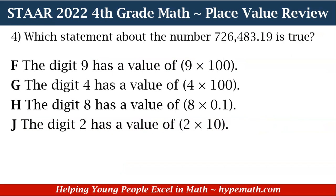Let's dive into question number four — this problem is in our workbook, available to purchase in our store; the link is in the description box. The problem says: which statement about the number 726,483 and 1,900 is true? F: the digit has a value of 9 times 100. G: the digit 4 has a value of 4 times 100. H: the digit 8 has a value of 8 times 1 tenth. J: the digit 2 has a value of 2 times 10. Looking at the answer choices, they are using expanded form — if you said expanded form, you're absolutely right.